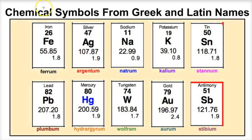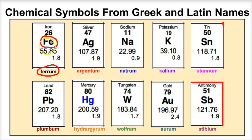Let's take a look at a few unusual ones. We have iron — the chemical symbol for iron is F-E. You might think it should be I-R, but it's capital F, lowercase e. Why? Because in Greek or Latin, the word for iron is ferrum, and so you can see where we get F-E from. Silver is A-G — you would think it might be S-I, but the chemical symbol is derived from the Greek or Latin word for silver, argentum.